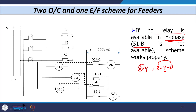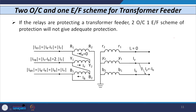Consider an example: in Y phase, there is no unit (51B has been removed) and we use the two overcurrent, one earth fault scheme. Now suppose a Y-B fault occurs on the secondary (star) side of the transformer. In case of a Y-B fault, the current IY equals minus IB and ideally IR equals 0, so IR = 0 and IY = −IB.